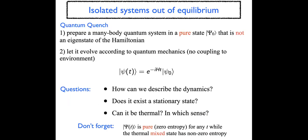What we have in mind is to study an isolated quantum system out of equilibrium. The idea is that of a quantum quench, which means we prepare a many-body quantum system — which can be, for example, a quantum field theory or a real gas in an experiment — in a given pure state that we call psi naught, which is not an eigenstate of the Hamiltonian that governs the evolution. Then, from time t equals zero, we let it evolve according to the quantum mechanical rules. The system is isolated: there is no environment, no bath. The state remains pure at any time, given by the Schrödinger equation.